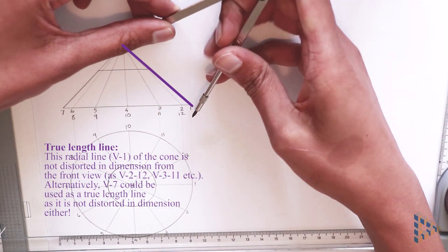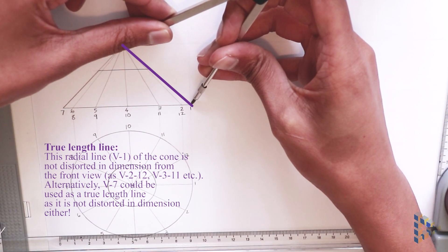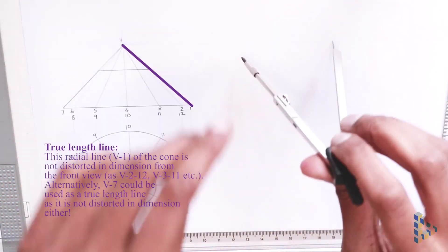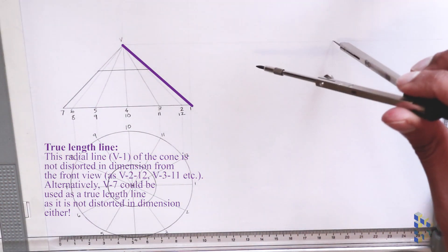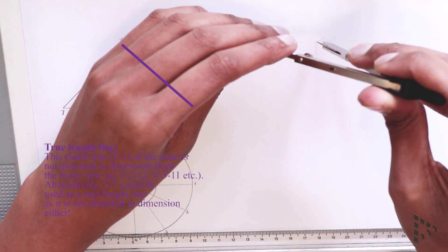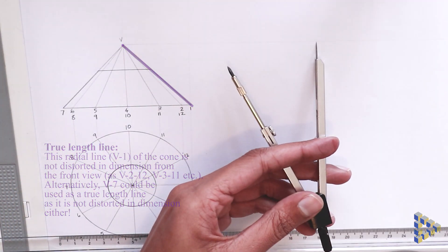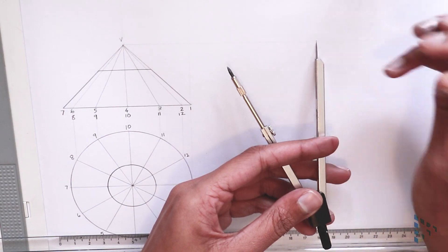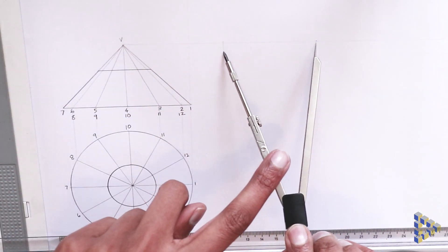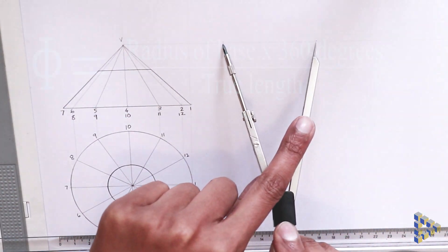which in this case is from V to 1 or from V to 7, as this edge of the cone is not distorted in dimension when we view it from the front view. Now, I use my compass to draw the outer dimension of the cone.